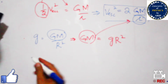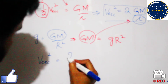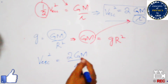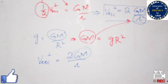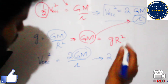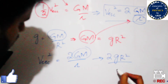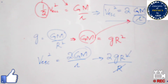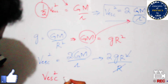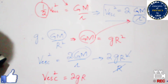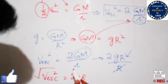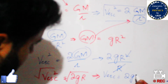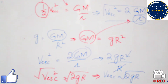Substituting GM = gR² into the expression v_escape² = 2GM/r, and canceling r, we get v_escape² = 2gR. Taking the square root of both sides, the final expression is: v_escape = √(2gR).